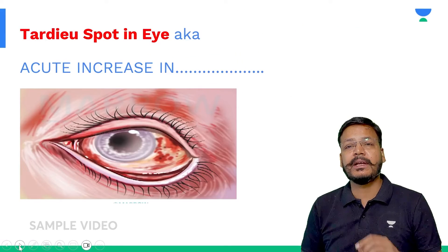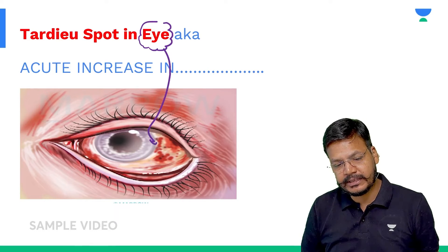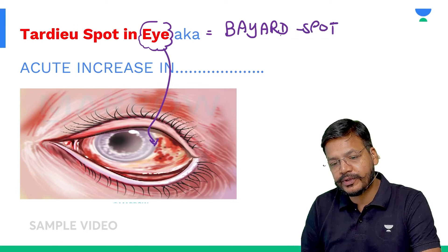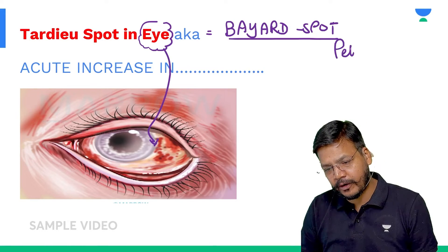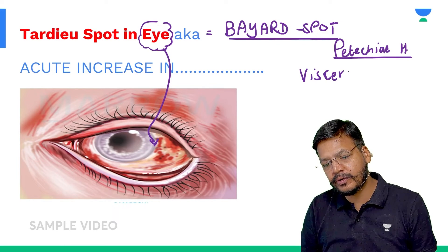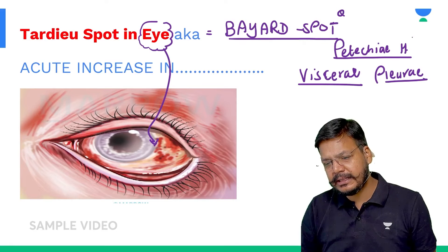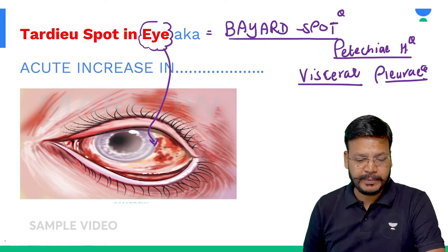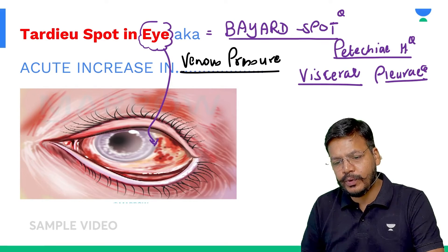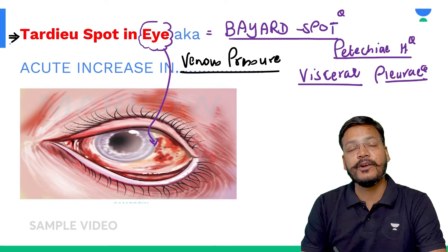Tardieu spots — the most common site of Tardieu spots is the eye. These petechial hemorrhages are also known as 'beard spots.' Tardieu spots are petechial hemorrhages seen on the eye and in visceral pleura. They are caused by an acute rise in venous pressure, which leads to rupture of venules and capillaries. The most common site is the eye.